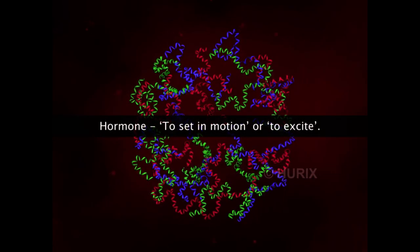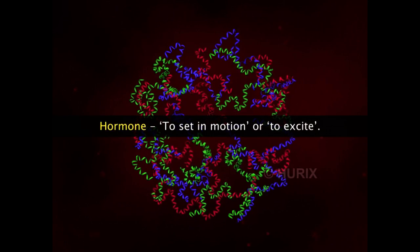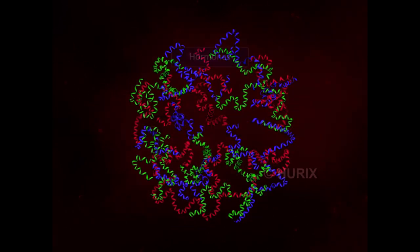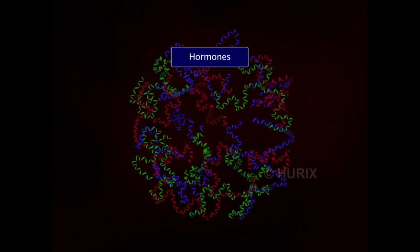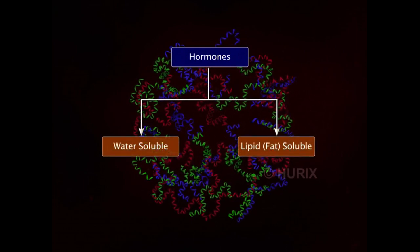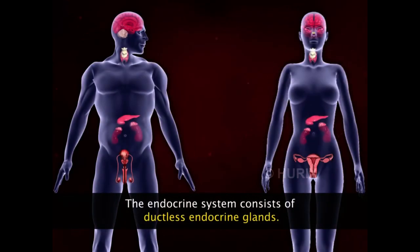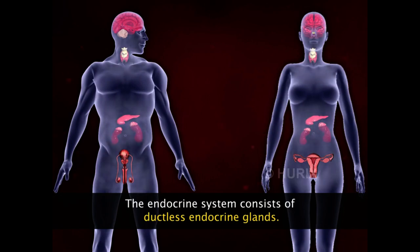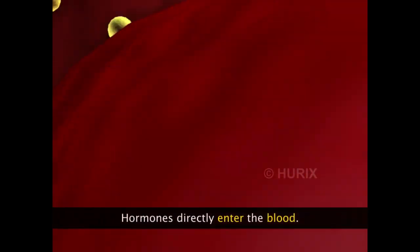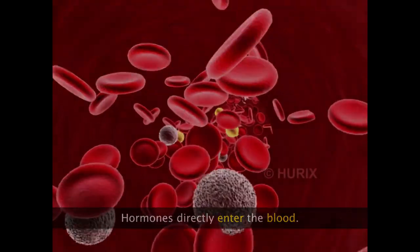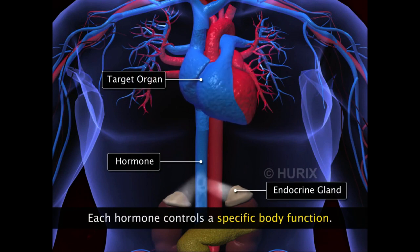The term hormone originated from the Greek word 'hormon,' which means to set in motion or to excite. Most hormones are biomolecules that are either soluble in water or lipids. The endocrine system is a collection of ductless endocrine glands that pour their hormones directly into the blood. Each gland secretes one or more hormones, each controlling a specific body function.